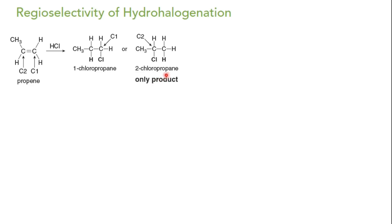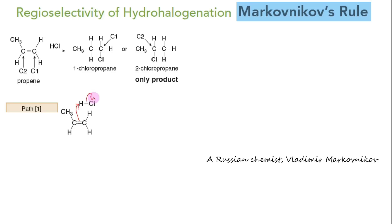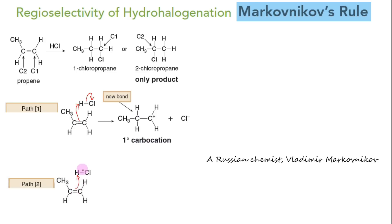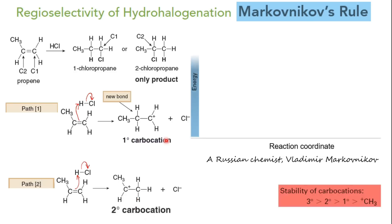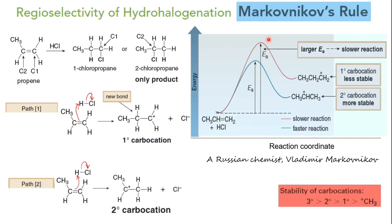This reaction is a specific example of a general trend called Markovnikov's rule, named after the Russian chemist who first determined the regioselectivity of electrophilic addition of HX to unsymmetrical alkenes. In case of unsymmetrical alkenes, based on which carbon of the double bond attaches with the hydrogen of HX, there are two possible pathways for the first step. Path 1 shows H attached to the more substituted carbon, forming a primary carbocation intermediate. Path 2 shows H attached to the less substituted carbon to form a secondary carbocation. As per the Hammond postulate, Path 2 is faster because formation of the carbocation is an endothermic process.